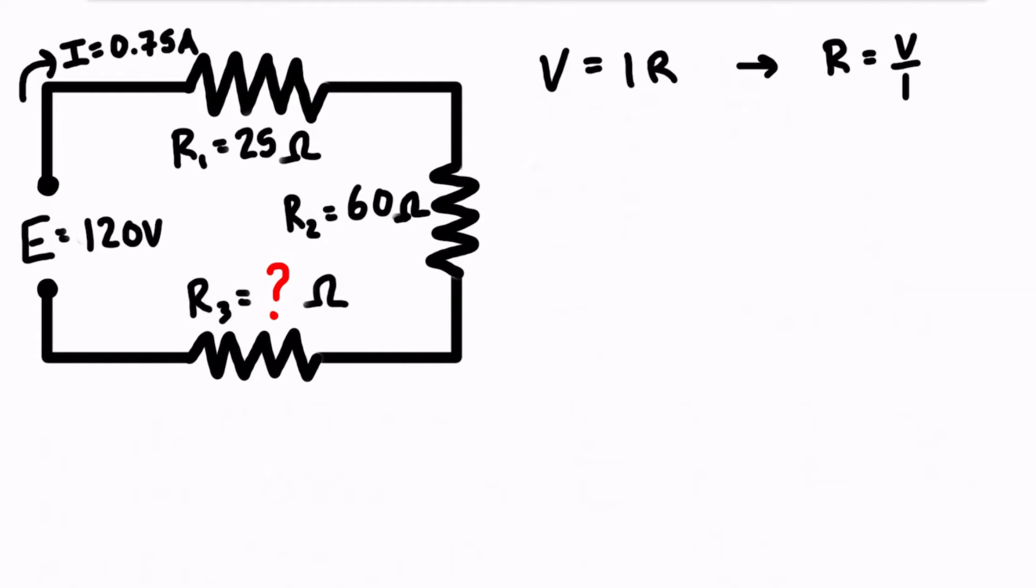When we want to solve for the total resistance of the circuit we can subscript that RT and this will be equal to the total voltage which is often referred to as E, capital E. Sometimes you see that when it's referring to the source voltage instead of saying something like VT and we're going to divide that by the total current.